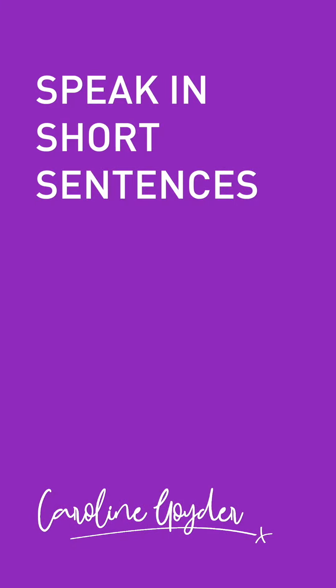Where ums and errs really don't work is when they're distracting an audience because you're putting them in all the time. A really simple way to cut ums and errs is this: speak in short sentences, maximum about eight words. When you get to the end of the sentence, just close your mouth. Start a new sentence by opening your mouth — you will have breathed in — and then finish that sentence by closing your mouth. And what you find is that the ums and errs just disappear like magic.